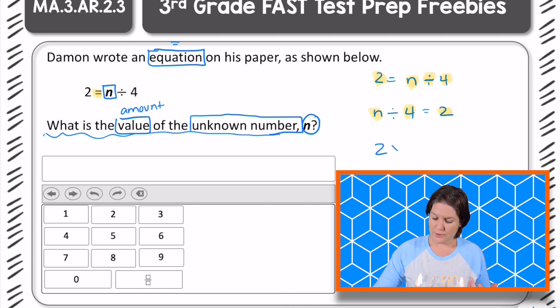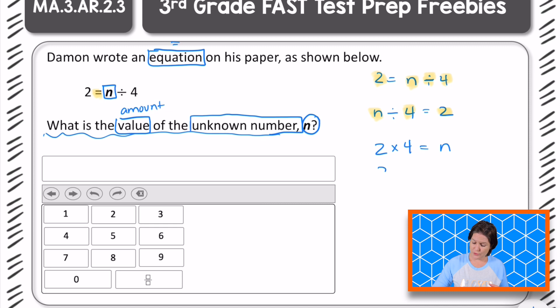So if I just go backwards and I say 2 times 4 equals what total, that should give me my answer right there. So 2 times 4 should equal n. What is 2 times 4? Eight, right? 2 times 4 equals 8.